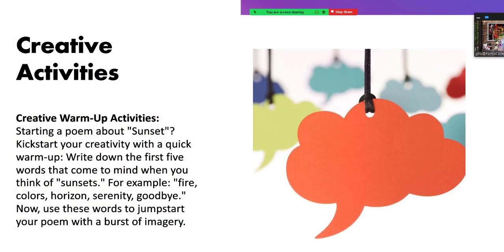Creative warm-up activities. Starting a poem about sunsets — kickstart your creativity with a quick warm-up. Write down the first five words that come to mind when you think of sunsets. Put 'sunsets' at the center of your paper as the main topic, then around it write any other words you associate with sunsets, for example: fire, color, horizon, serenity, goodbye. Now use these words to jumpstart your poem with a burst of imagery.